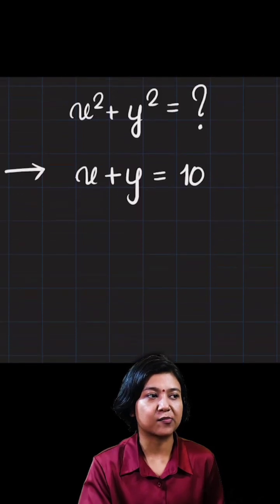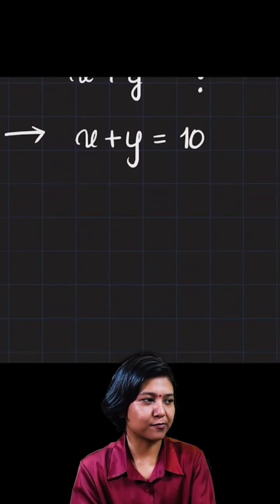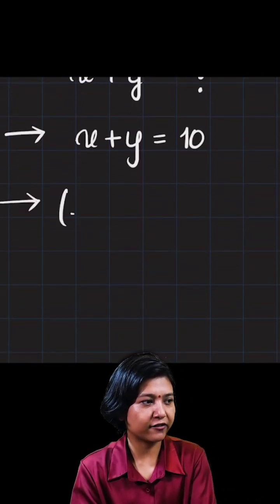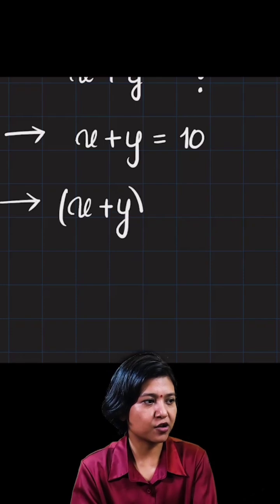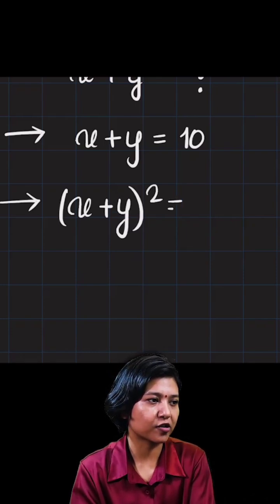Now note that when you're squaring a plus b, don't write a squared plus b squared. When you have the sum of two terms and you square them, it becomes whole squared.